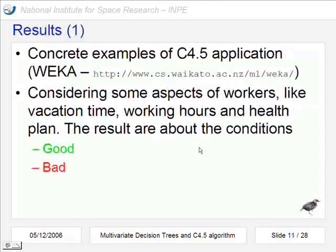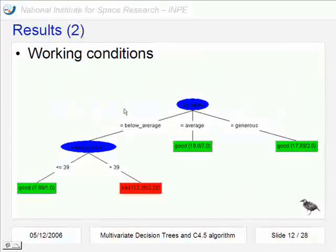Now some results of this algorithm that is available on software Weka. At this address you can download it free. We consider some aspects of workers, like vacation time, working hours and health plan, and the result will be the conditions of the work, good or bad. Here is a simple example of a decision tree that considers vacation and working hours.